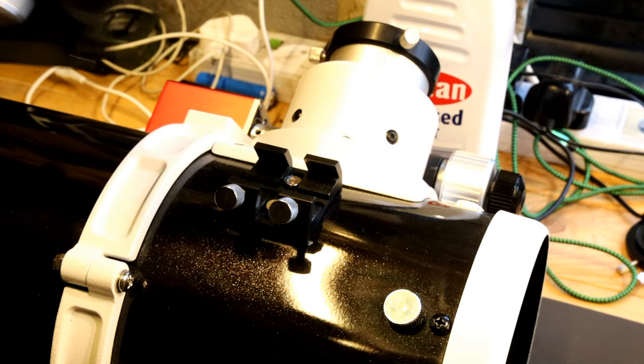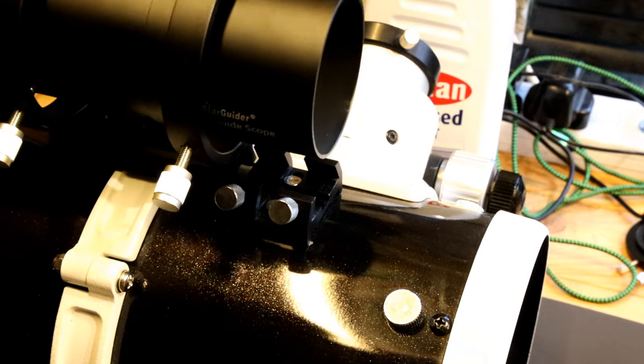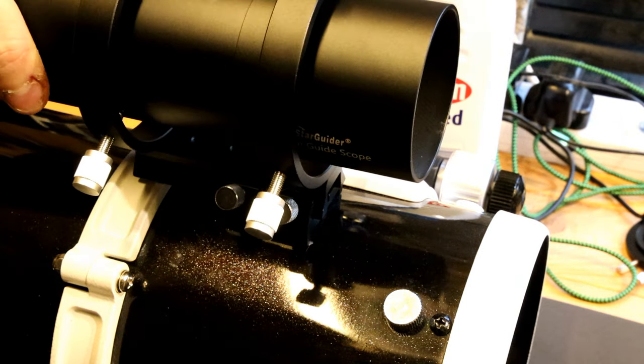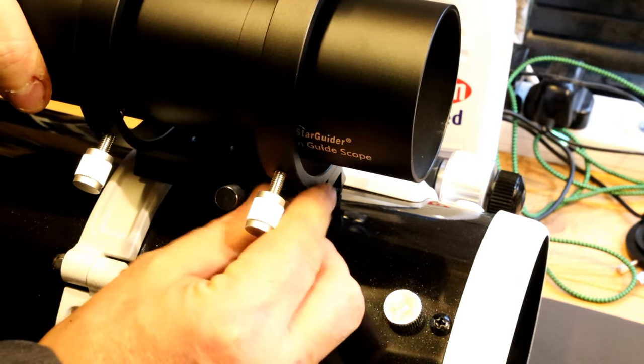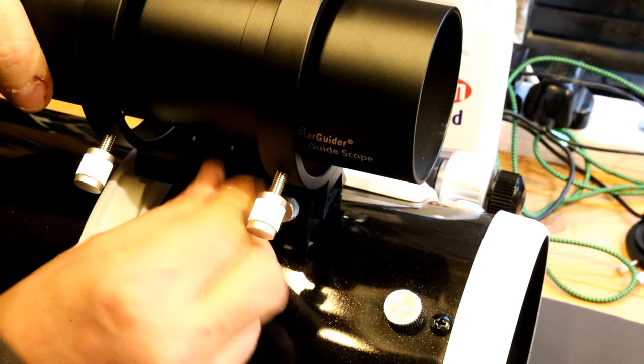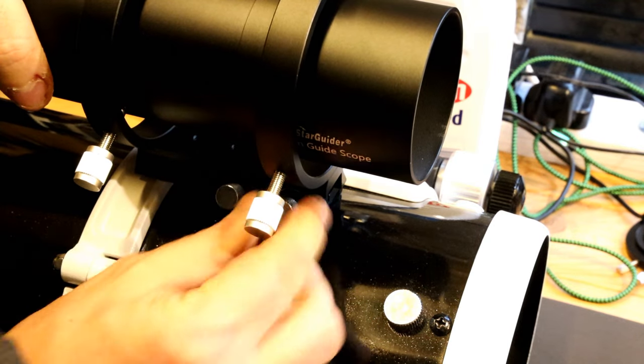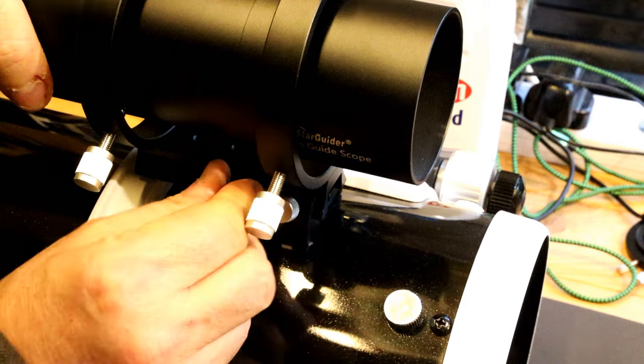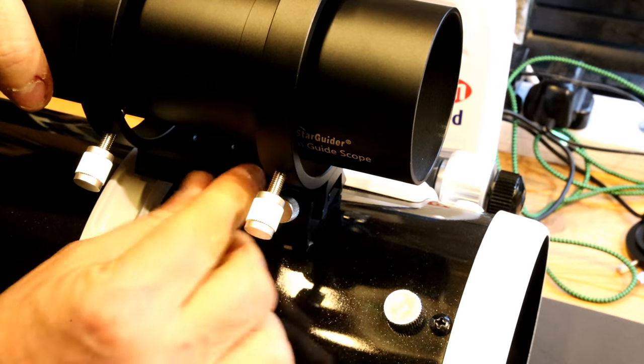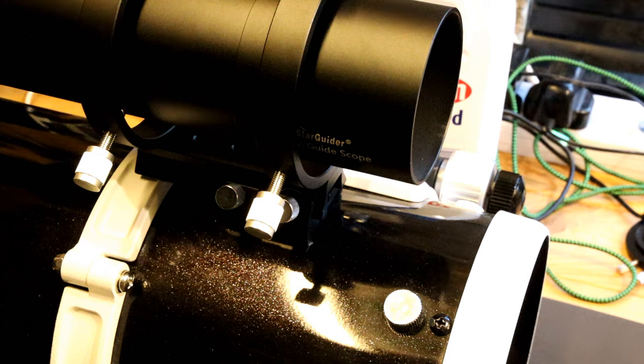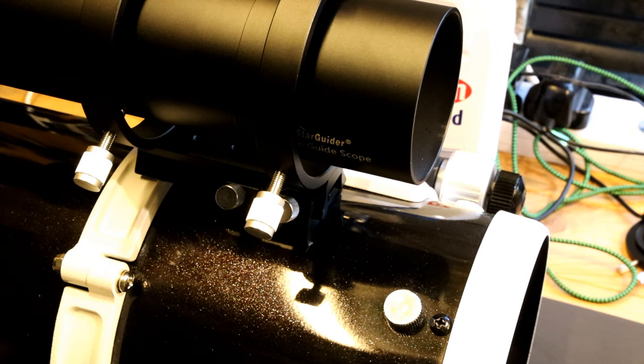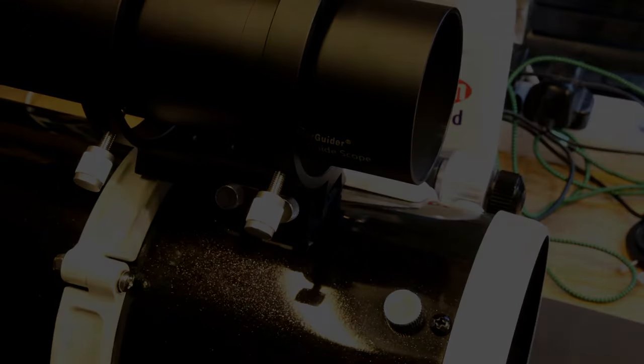They will hold a guide scope a lot squarer and firmer. You can get a guide scope just with a little shoe there that fits nicely, and then once that's done up you've got a guide scope on your 130 PDS and that will keep that nice and accurate when guiding.